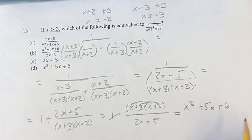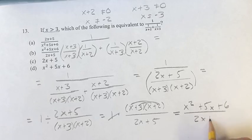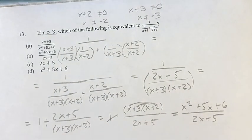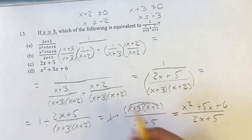This is over 2x plus 5, and this is going to be equivalent to b.